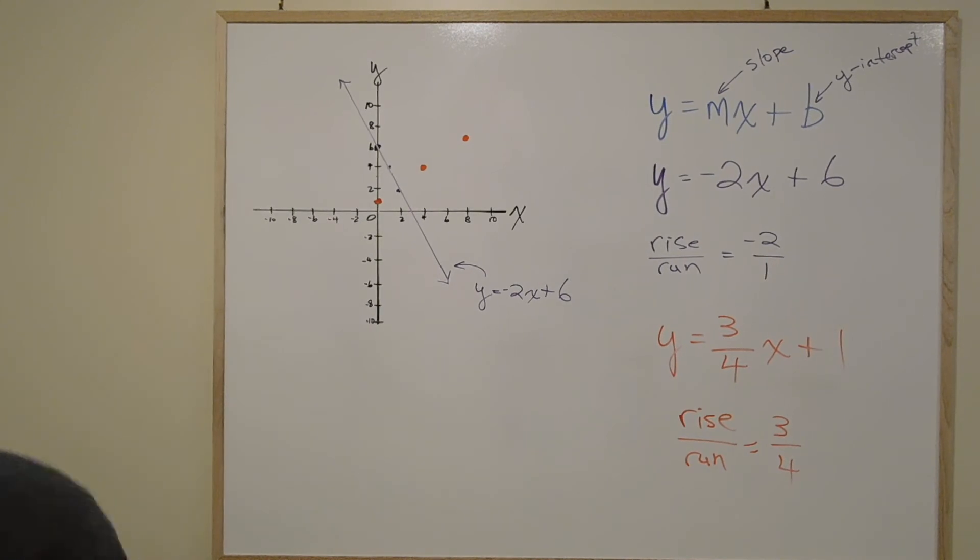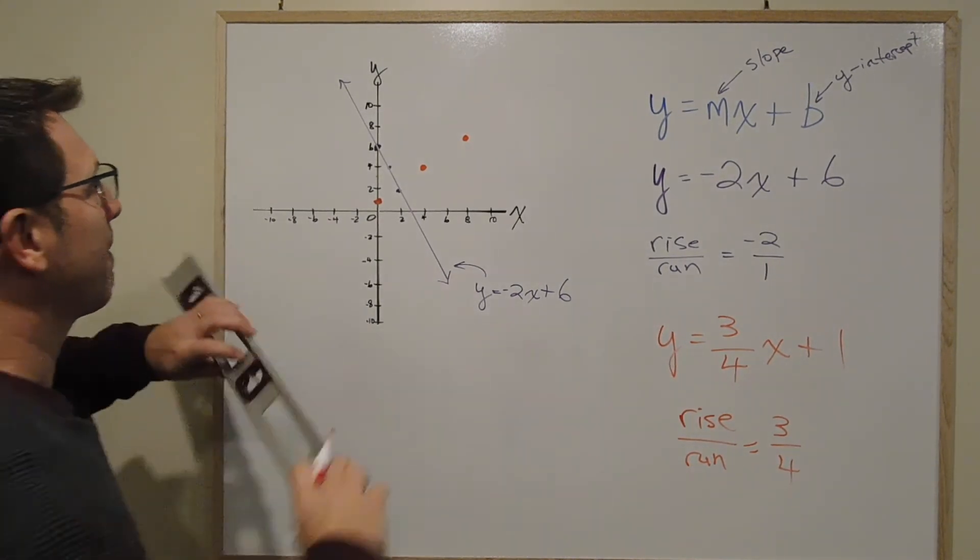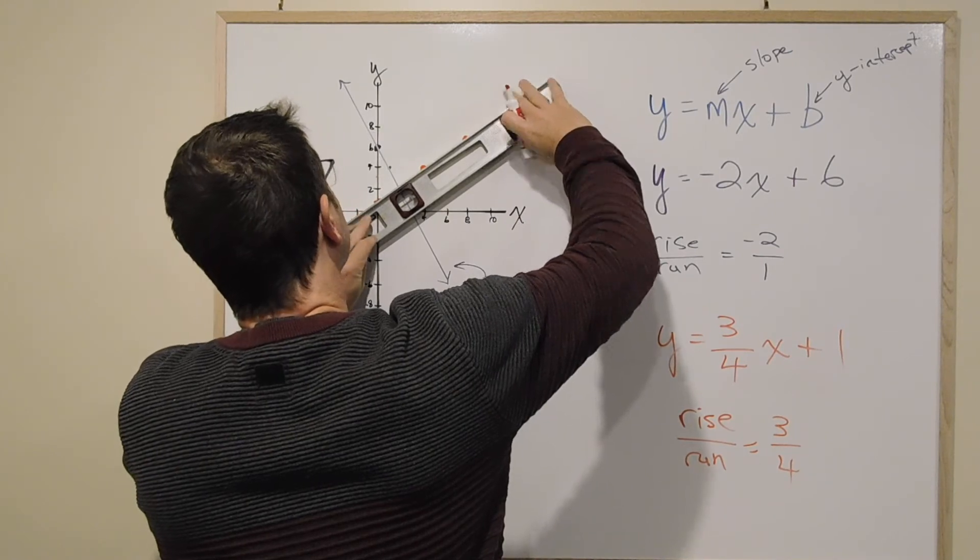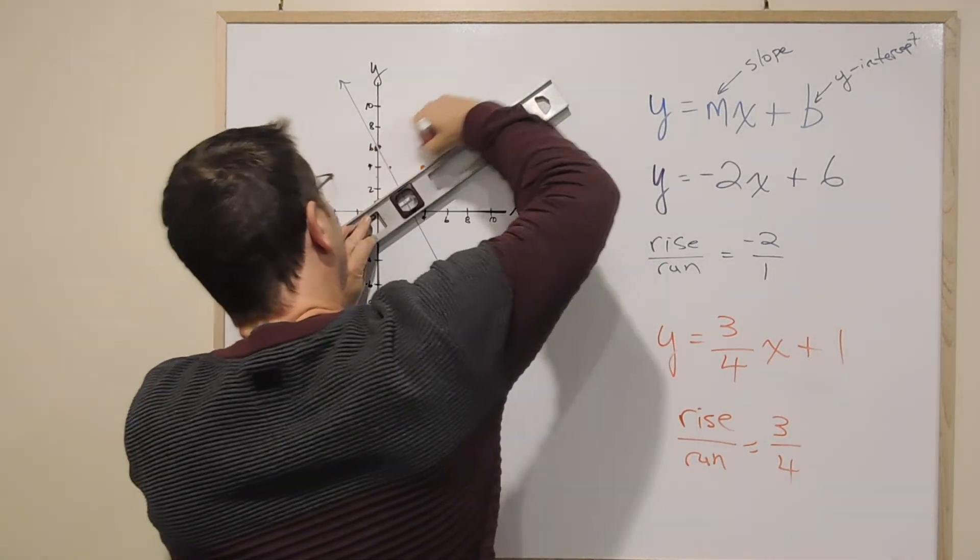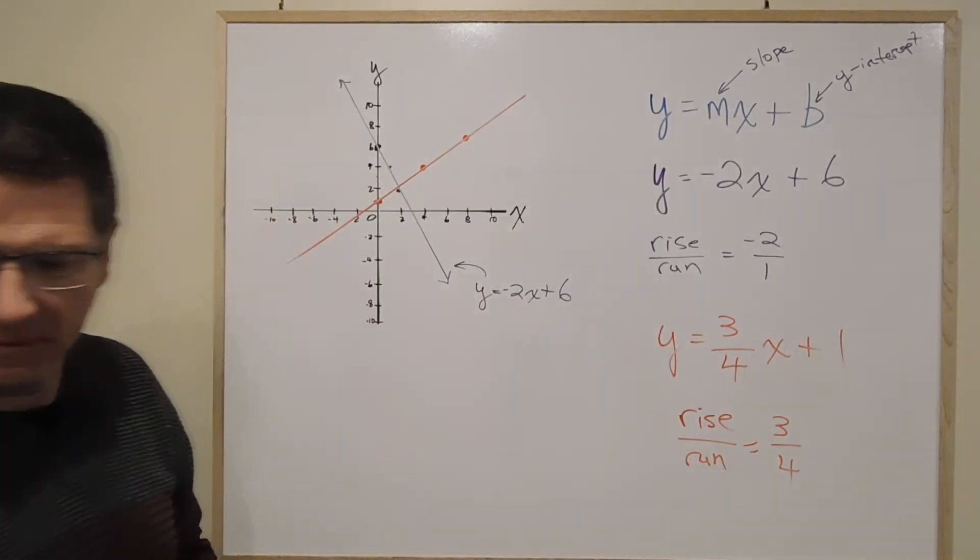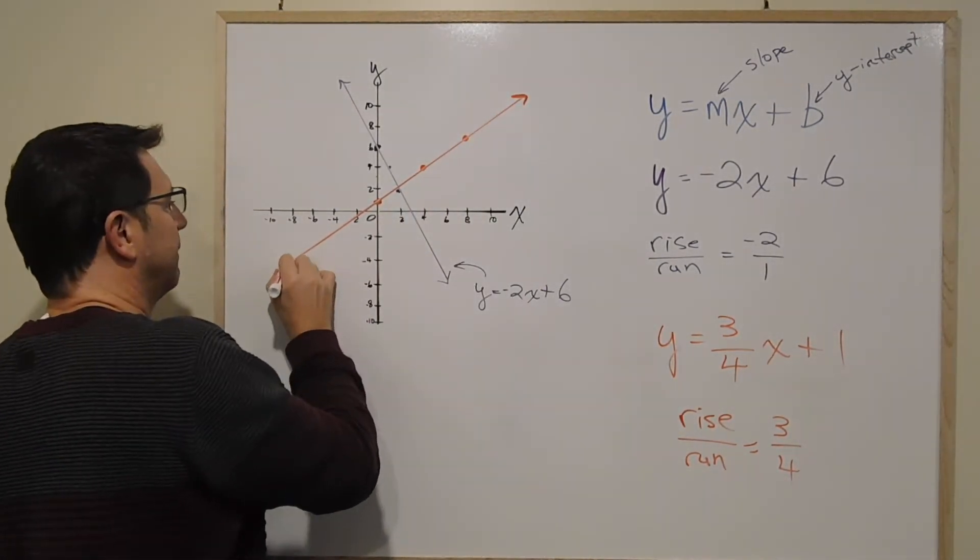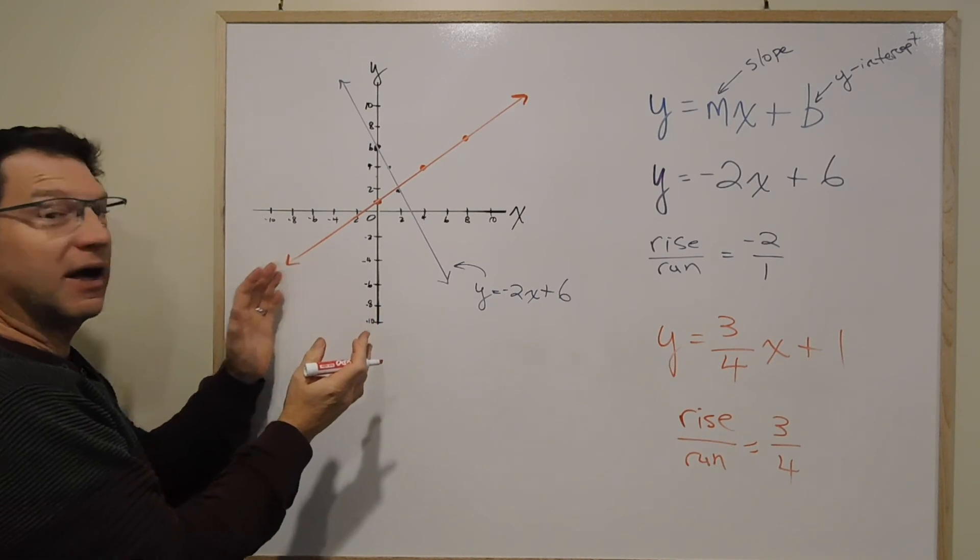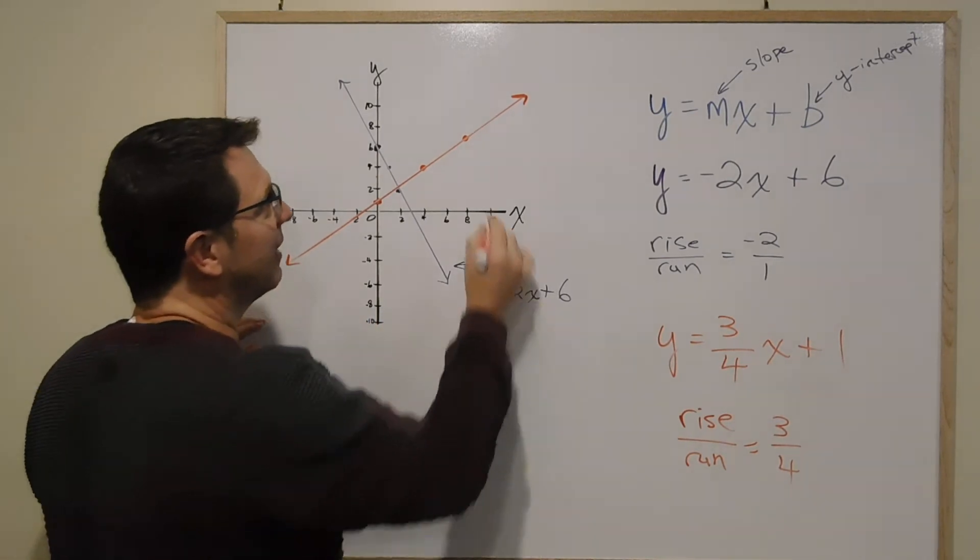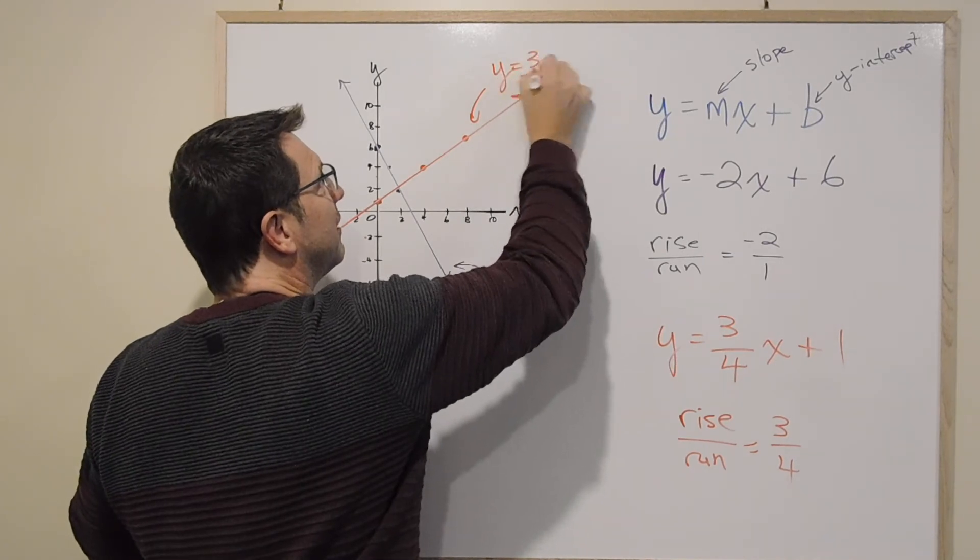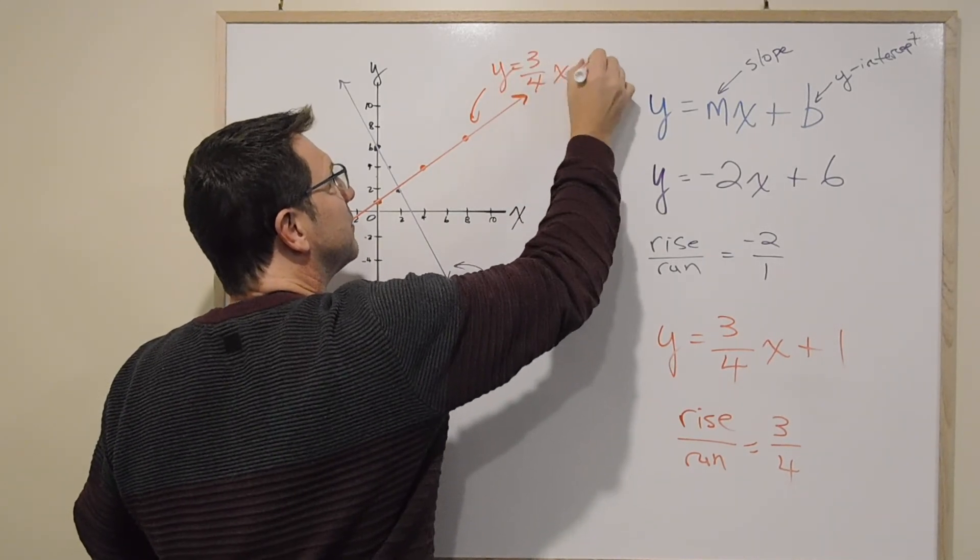So let's get our straight edge again. And we'll do this here. Draw our line. Put our arrows on our line. And since we have multiple lines on the same one, it's important to label it. So I will label it here. Y equals 3 fourths x plus 1.